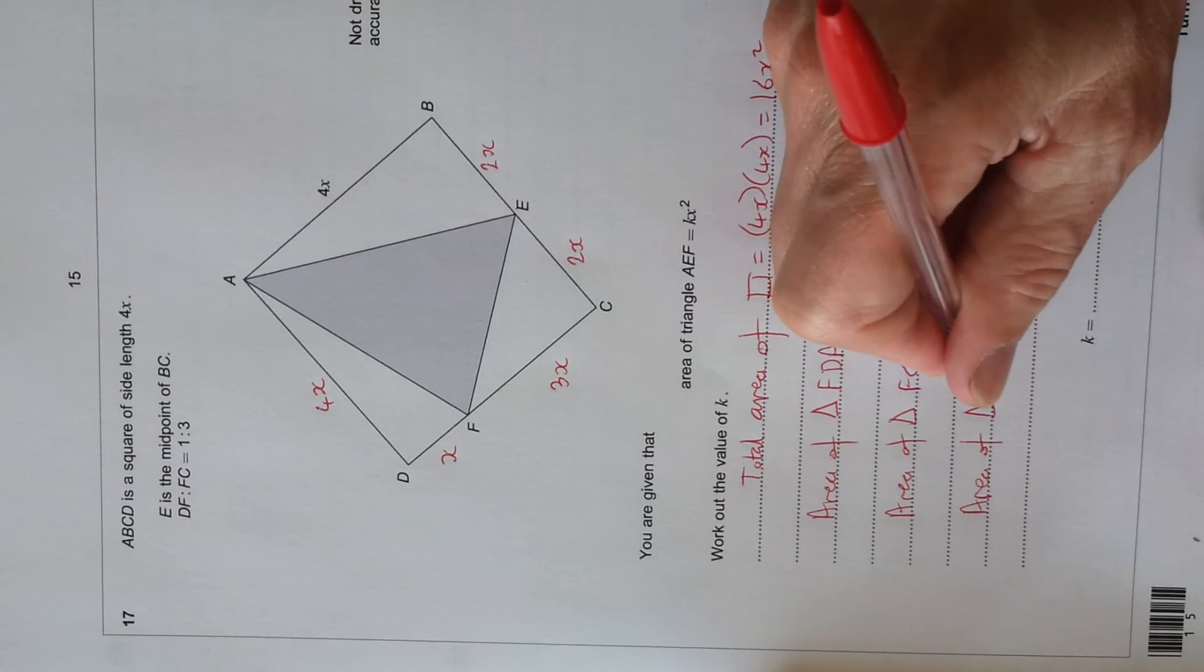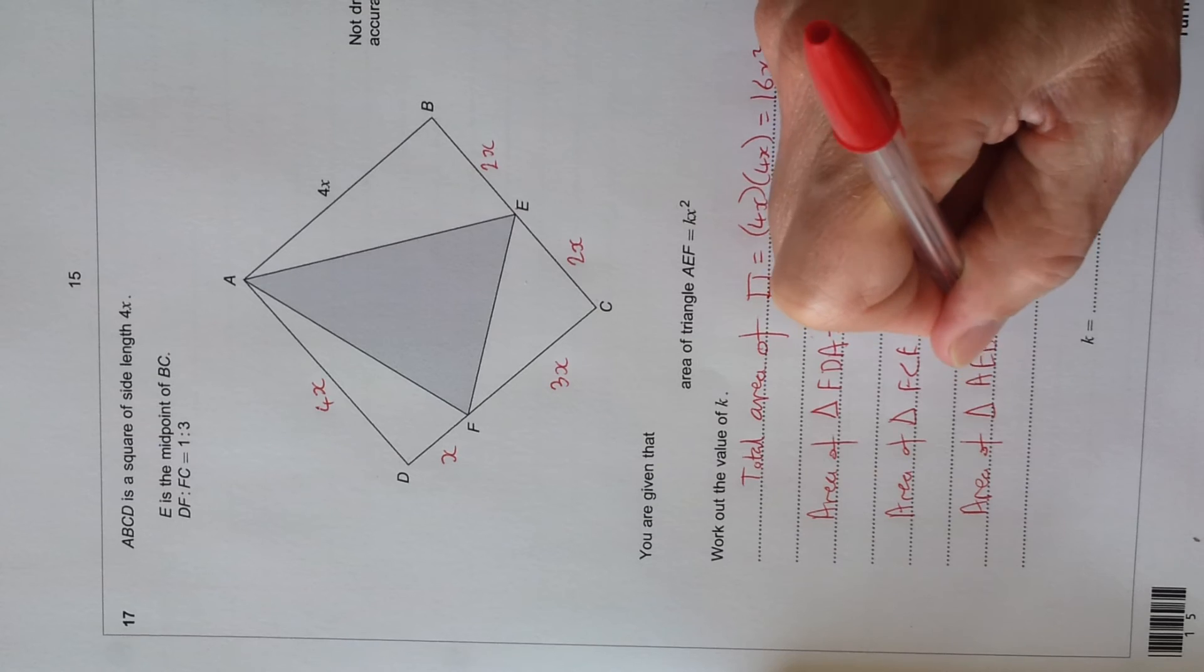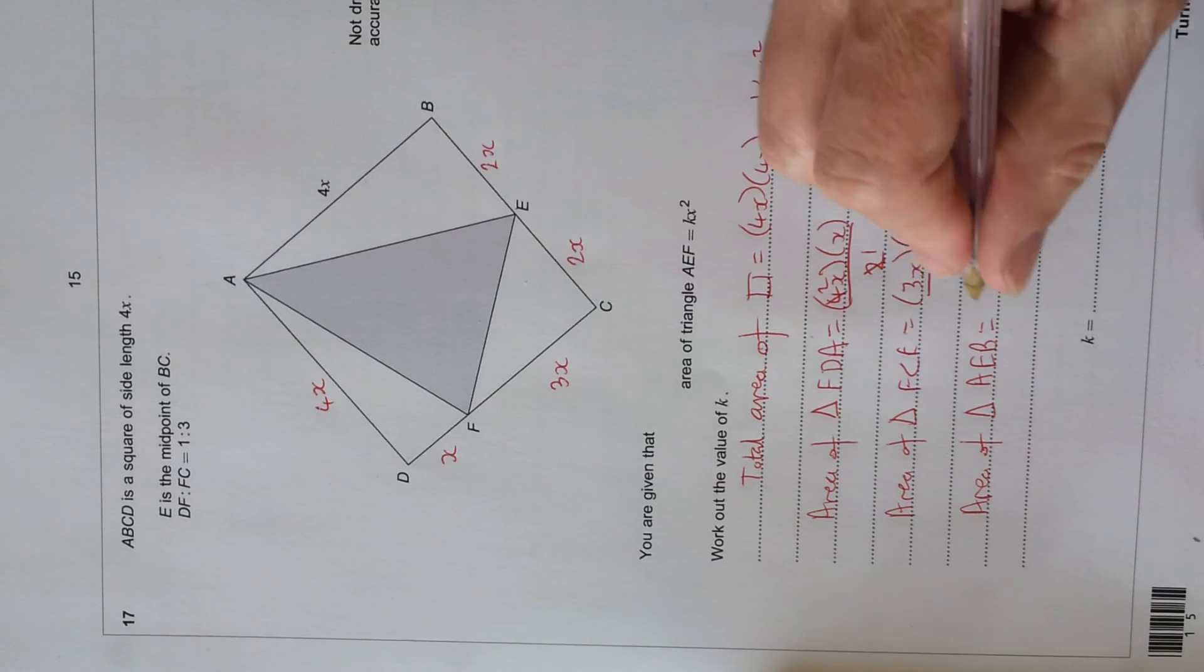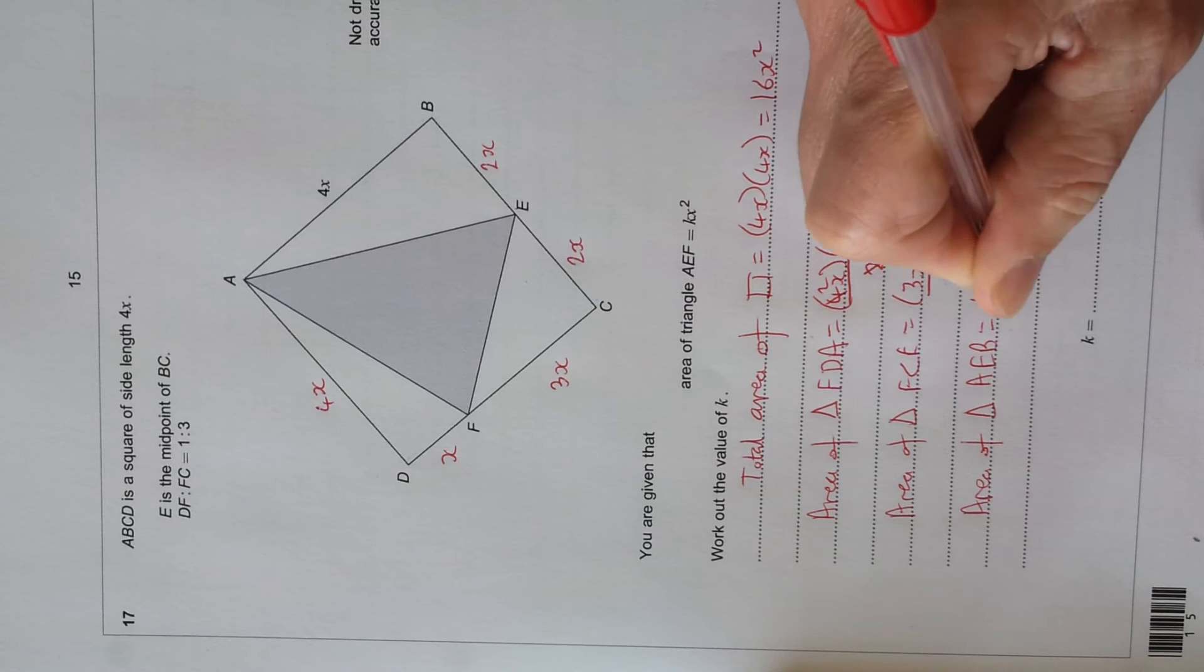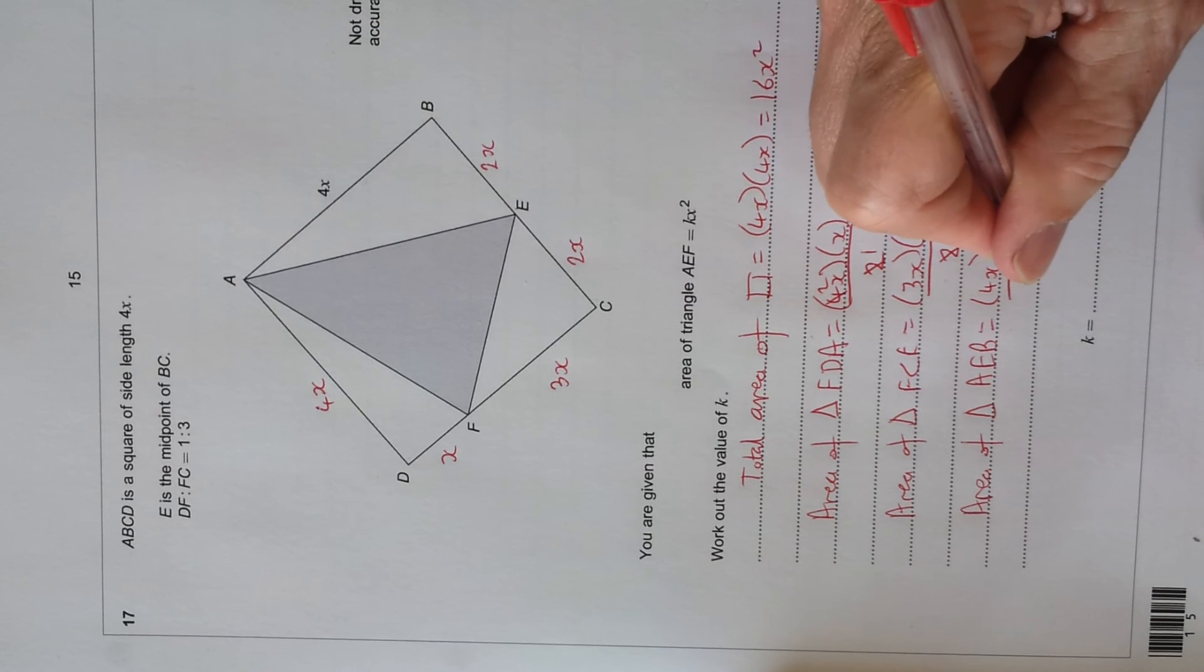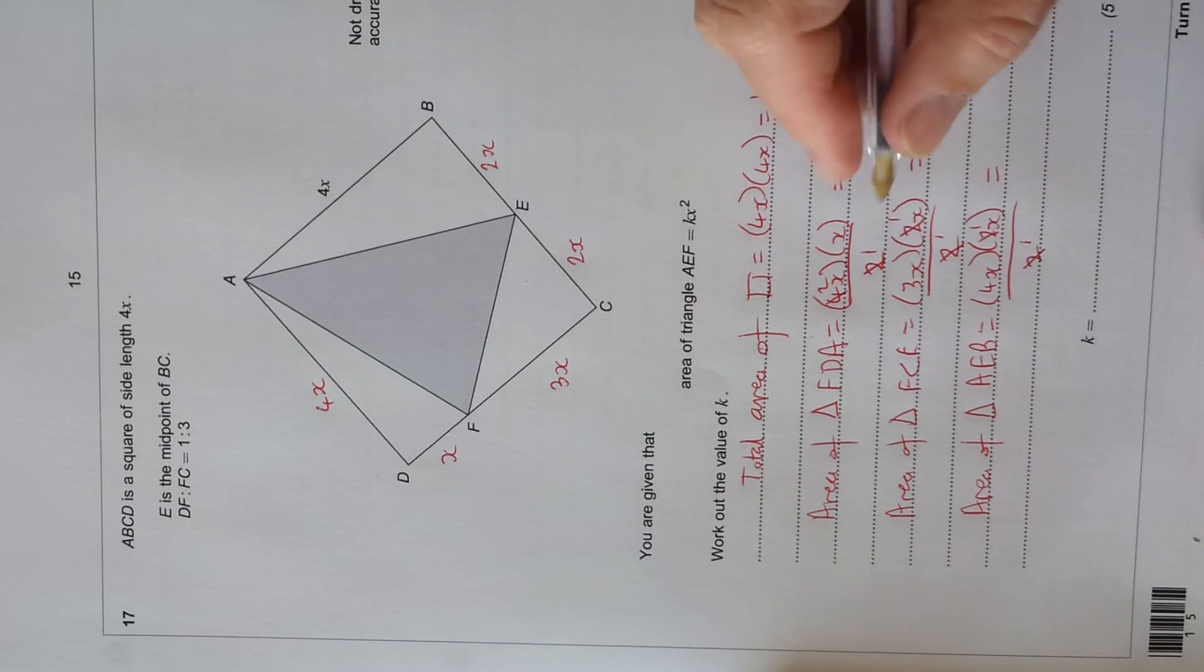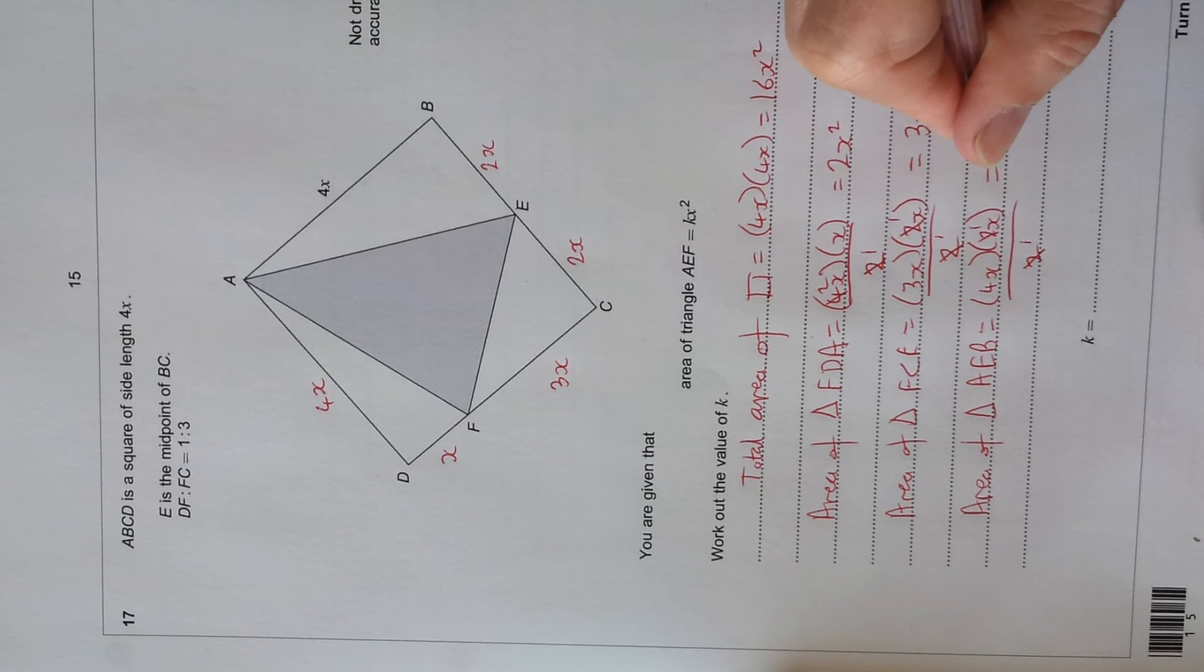Area of triangle AEB equals 4x times 2x, divided by 2, which is, let's cancel the 2s, 2 goes into 2 once, into 2 once. So we've got 4x squared.